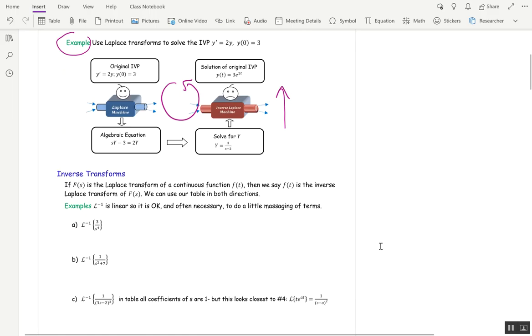For this first problem, we know that L of t cubed is 3 factorial, which is 6, over s to the fourth. So if we want L inverse of 3 over s to the fourth, we know we're thinking it's going to be t cubed times something. But if we took L of that, we'd have a 6 on top. We only want a 3 on top, so we'll multiply that by a half.